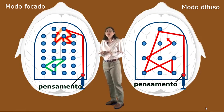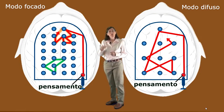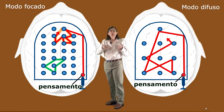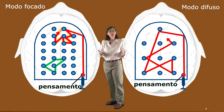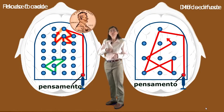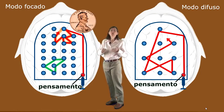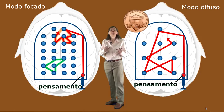Now, as far as neuroscientists know right now, you're either in the focus mode or the diffuse mode of thinking. It seems you can't be in both thinking modes at the same time. It's kind of like a coin. You can see either one side or the other side of the coin, but not both sides at the same time.